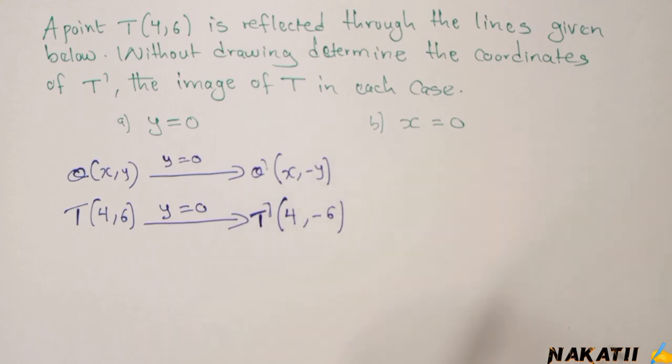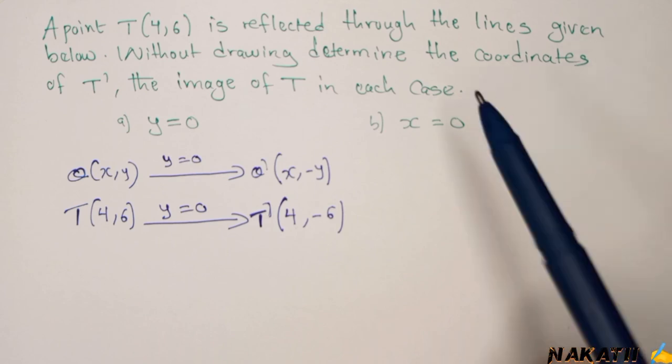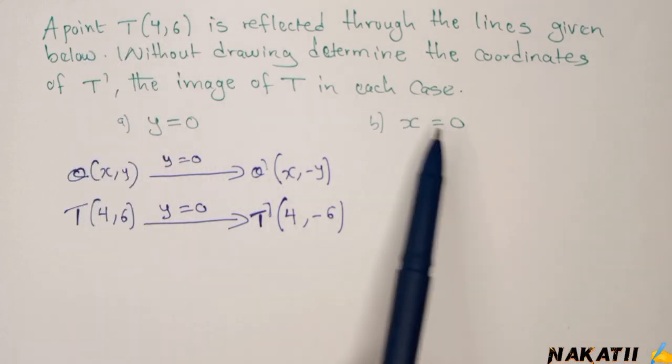So what has changed is only the sign of 6. So when you're reflecting, you only change the sign of y. Now, that is the answer.